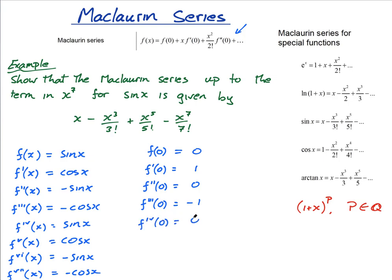Fourth derivative at zero is zero. Fifth derivative is one, sixth derivative is zero, and the seventh derivative is negative one.